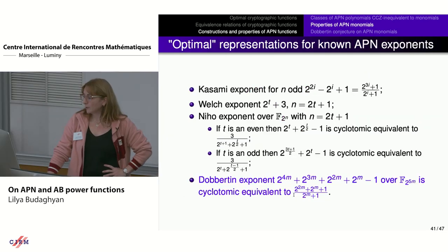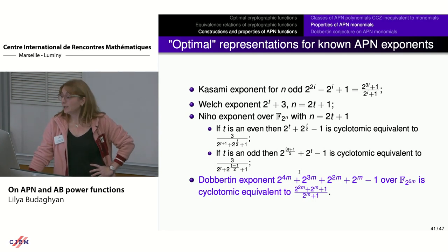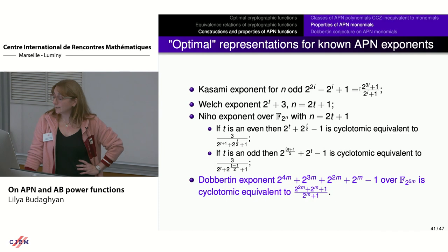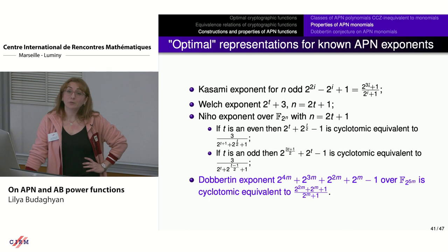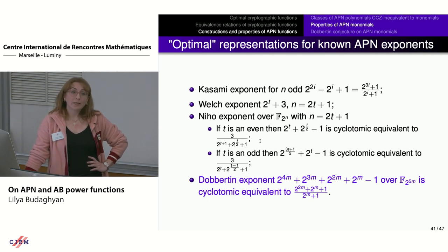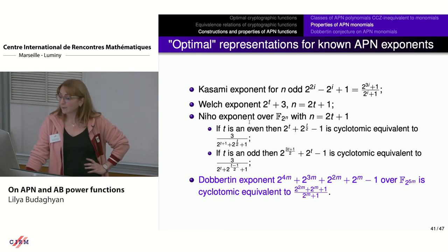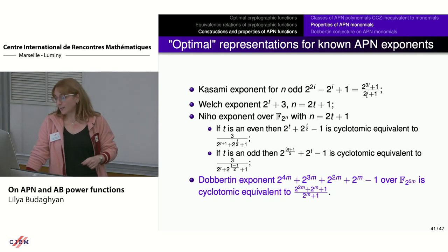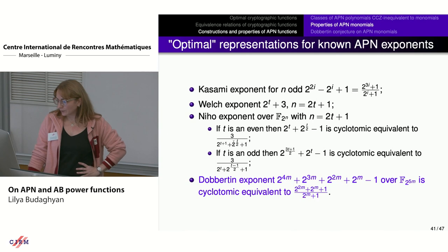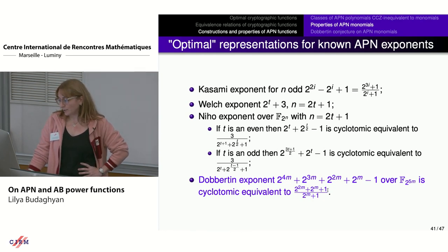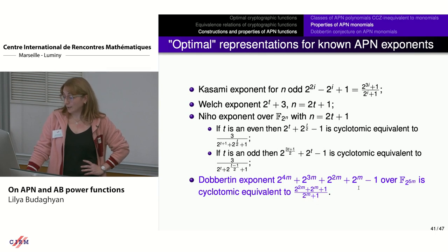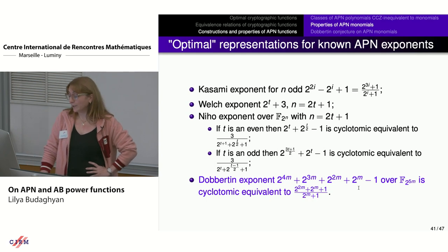We tried to attack the Walsh spectrum of the Dobertin function using Dobertin's approach for the Kasami function, which uses that the Kasami exponent can be represented as a fraction of two integers of binary weight 2. We derived optimal representations as fractions with numerator and denominator of as small weight as possible. For Niho functions we got a particular description, and for the Dobertin function it equals a fraction of an integer of weight 3 over one of weight 2 — quite nice, since the exponent itself has weight m+3. However, we could not finish the proof, so the conjecture remains open.